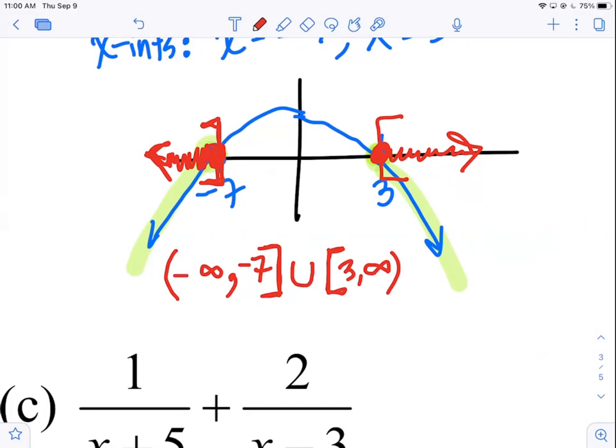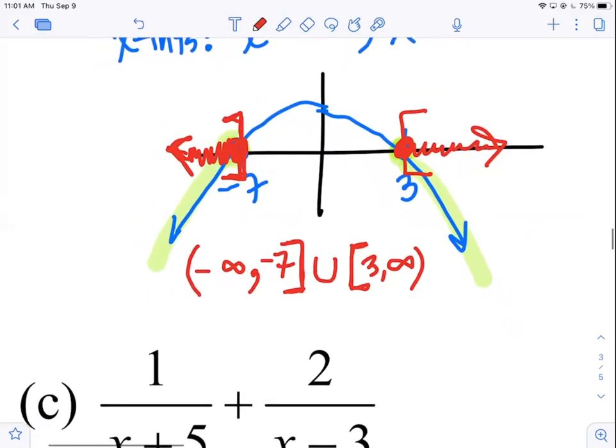And then we join them together with that symbol, which is what? Or. It's the union symbol. It means or. And then we pick up with a bracket three and we cruise all the way to infinity. So the numbers get the brackets here because it was less than or equal to zero. But infinity and negative infinity never, ever, ever, ever get the bracket, right?